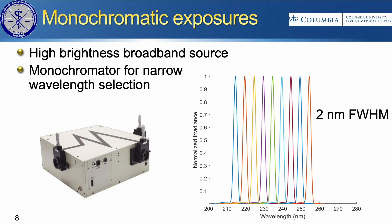Interestingly, these mice do not exhibit erythema with UVC exposure. Instead, they exhibit a slight edema, which is a swelling of the skin, or a slight fissuring — a little bit of a change in the texture of the skin — that you can see in person in the mouse when it happens very visibly, though it's tougher to capture in a picture.